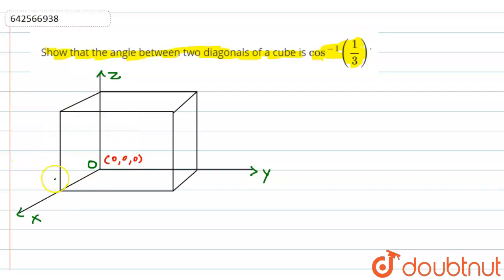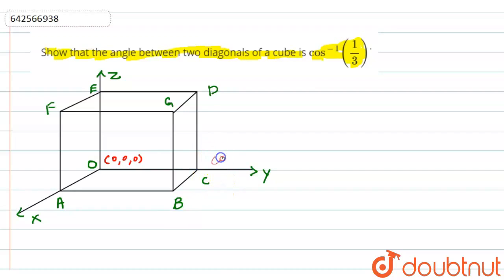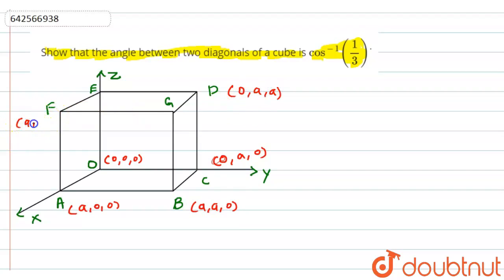Now let me name the vertices: A, B, C, D, E, F, and G. Using the edge length a, the coordinates are: C = (0, a, 0), A = (a, 0, 0), B = (a, a, 0), D = (0, a, a), F = (a, 0, a), E = (0, 0, a), and G = (a, a, a).